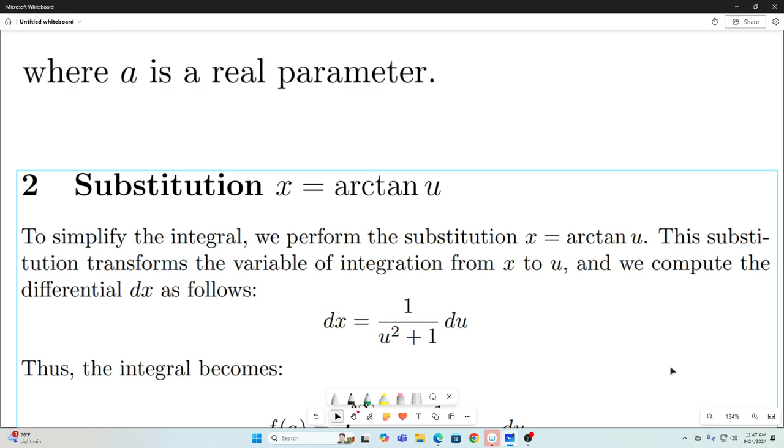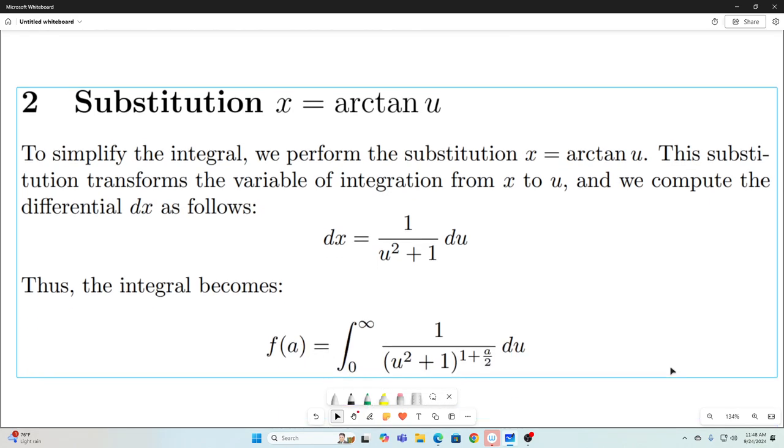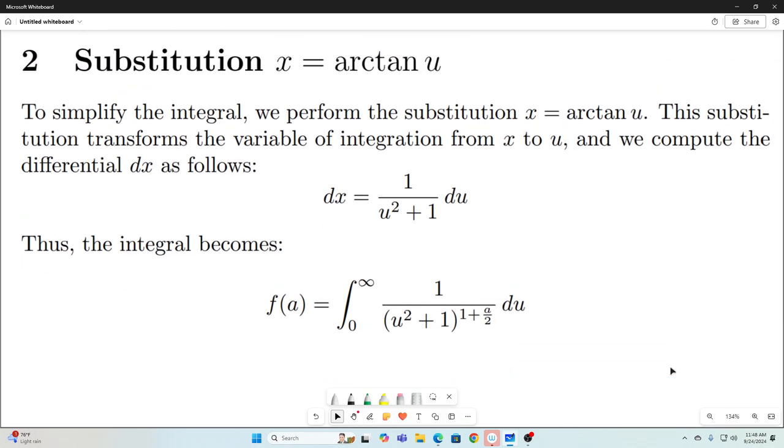Let's just make the substitution x equals arctangent u. That's going to give us dx equals 1 over u squared plus 1 du. And I'm not going to show the steps involved in this, but the integral will become this if you perform that substitution. If you let x equals arctangent u, you will find that the integral simplifies to this. Well actually, that's not very simple. That's kind of a messy expression, but it's better than what we had before. So now our f of a can be expressed that way.